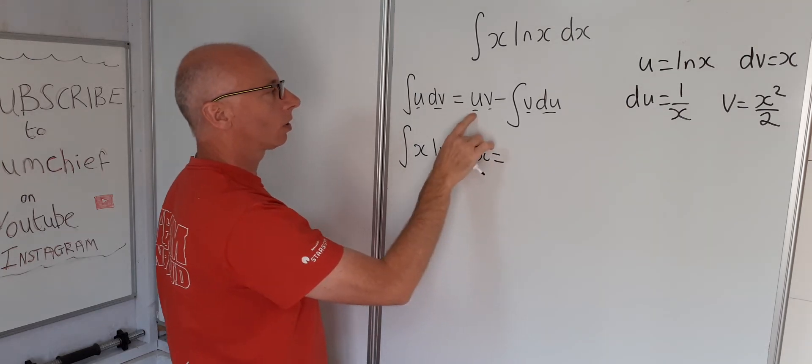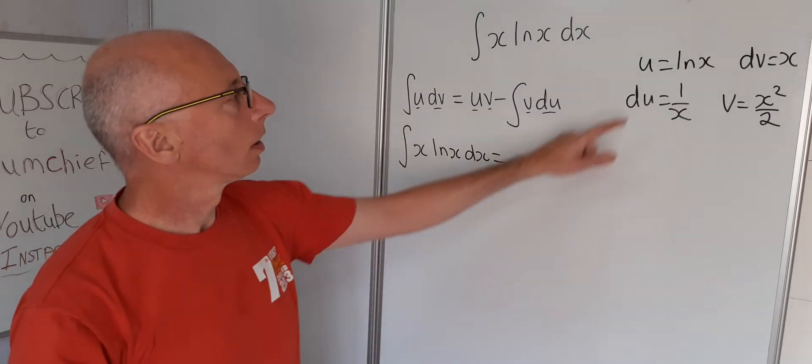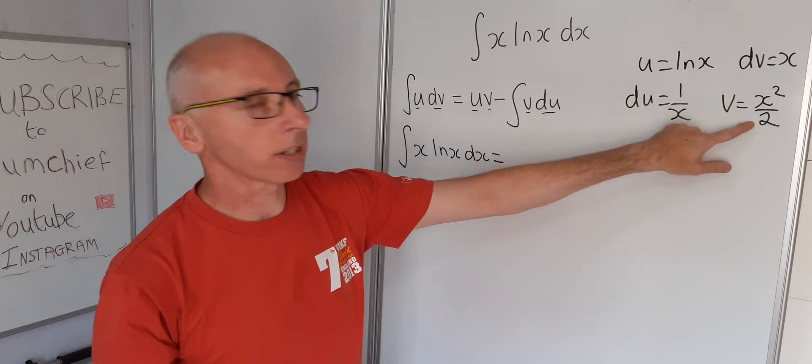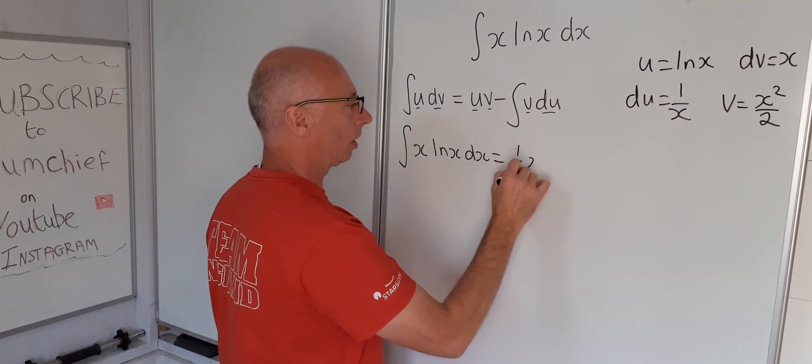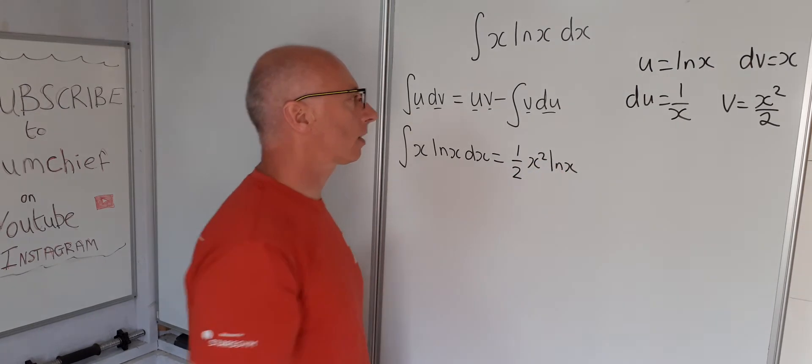equals u times v. That's natural log of x times x squared over 2. So let's pull out the half and write x squared natural log of x